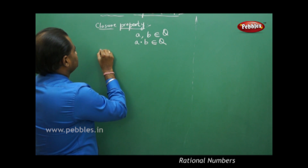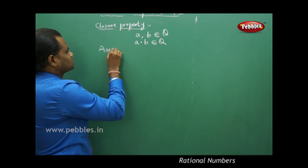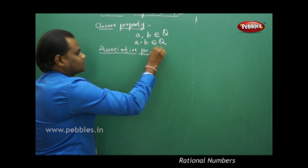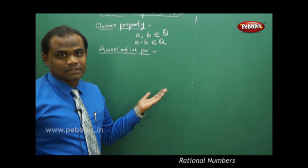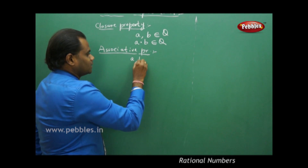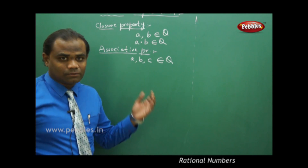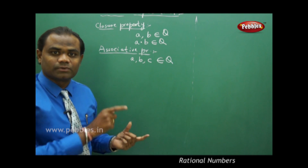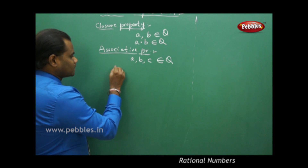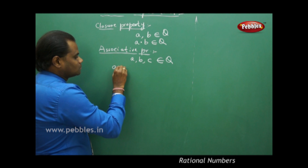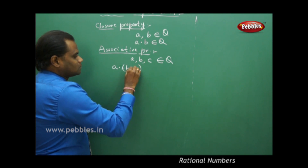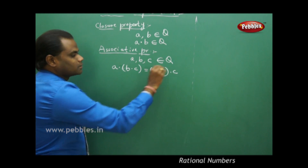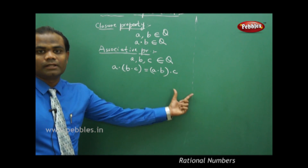The next property is the associative property. Associative property requires three basic elements, so let me take A, B, C belonging to Q. Whatever property we discussed in addition, the same holds here but instead of plus, replace it with multiplication. So the property goes as (A·B)·C = A·(B·C), which is the associative property for three different elements belonging to Q.